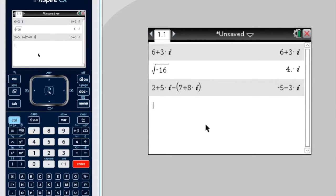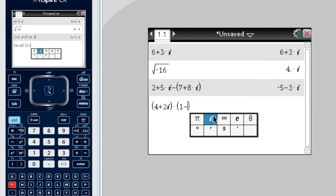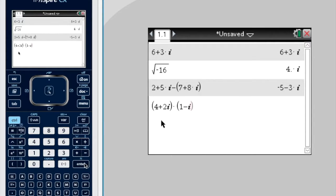For multiplication, you'll probably need brackets around both. So let's say 4 plus 2i, get out of the brackets, times, 1 minus i. Enter. Easy.